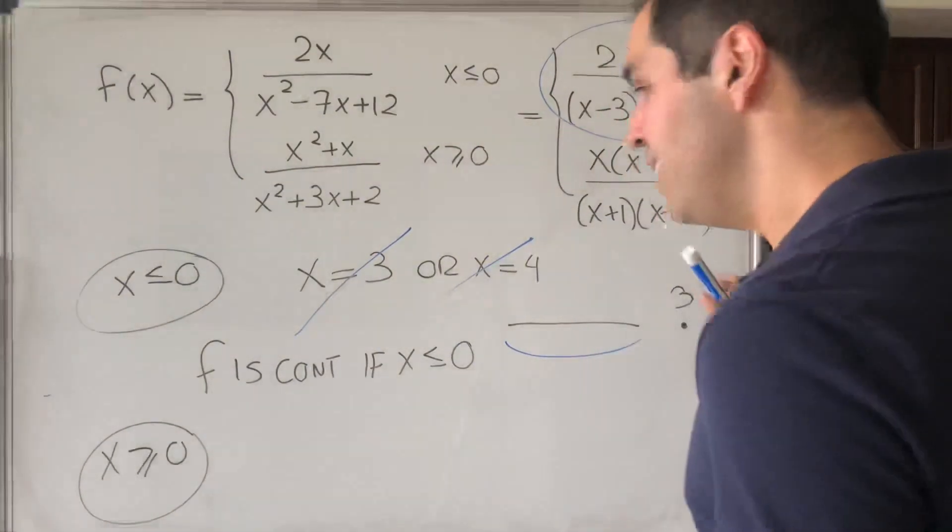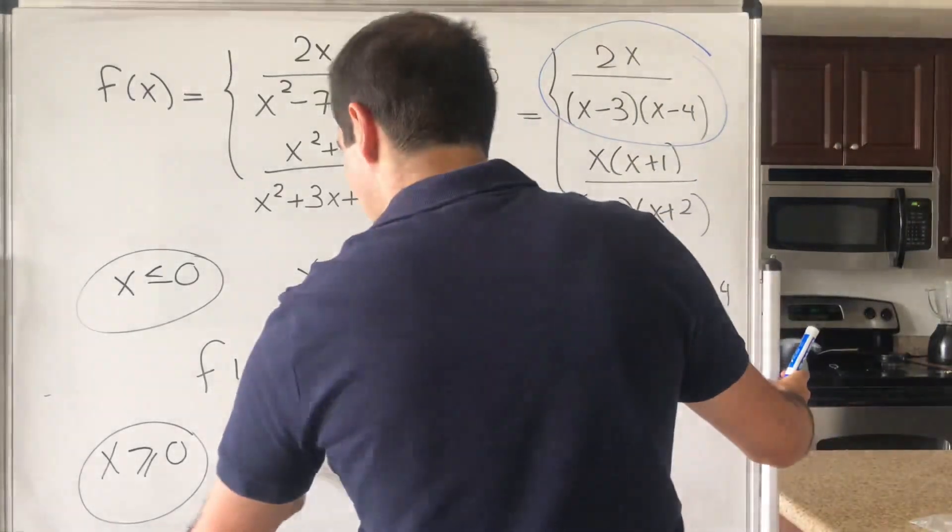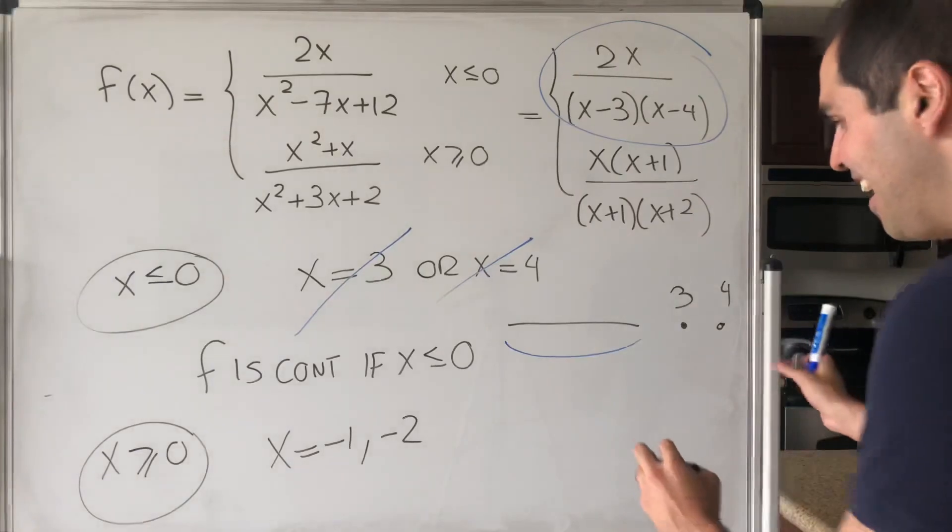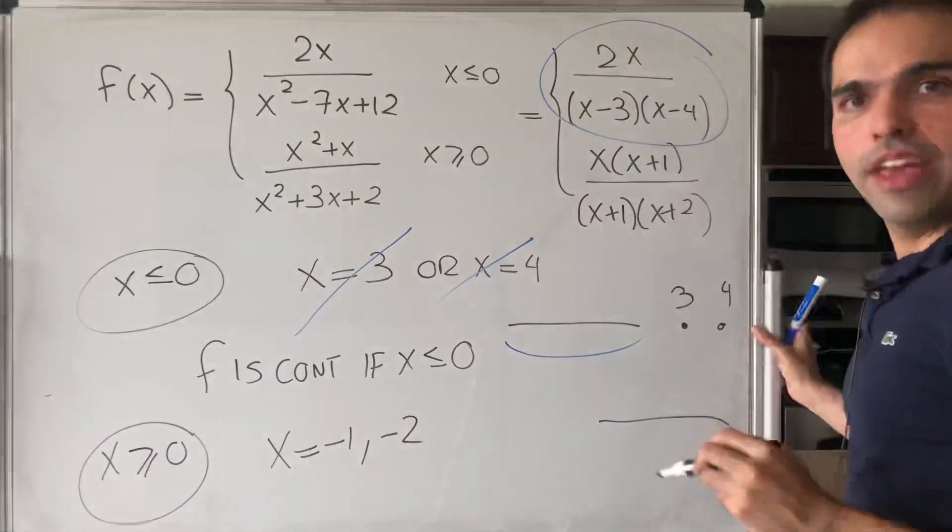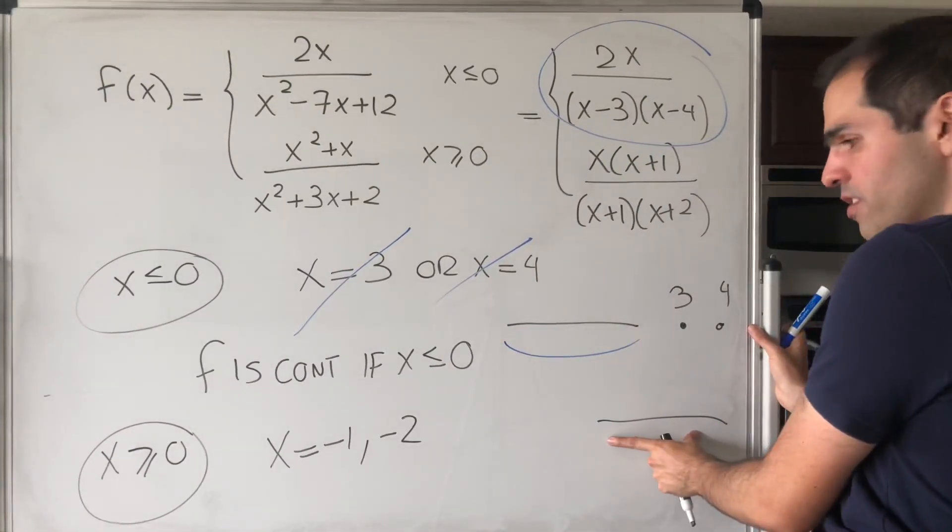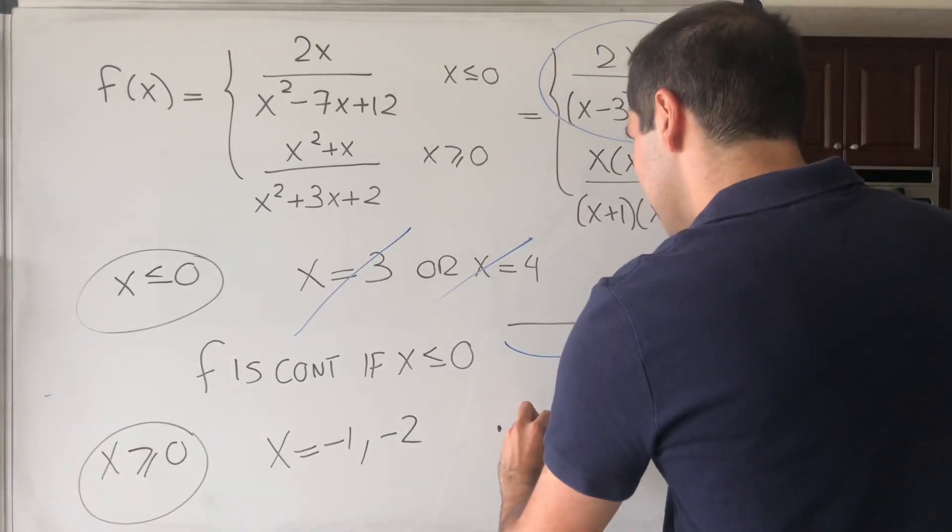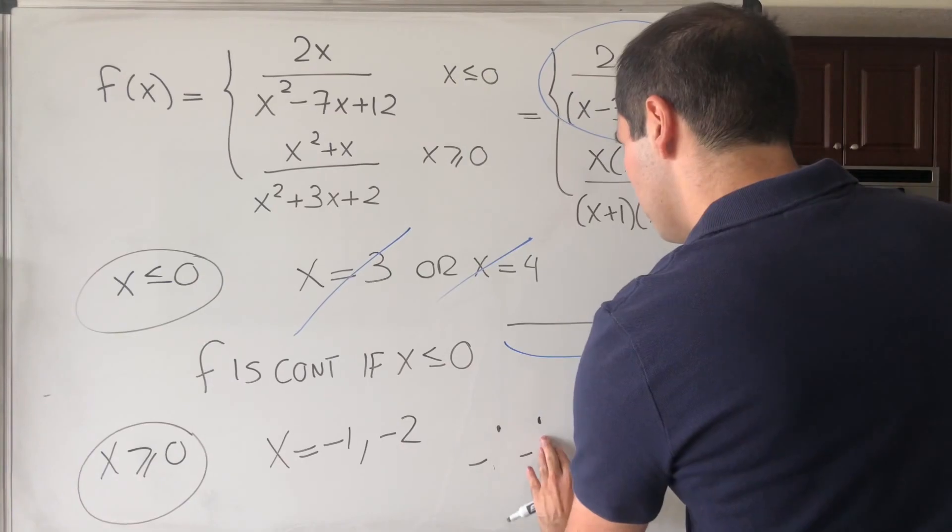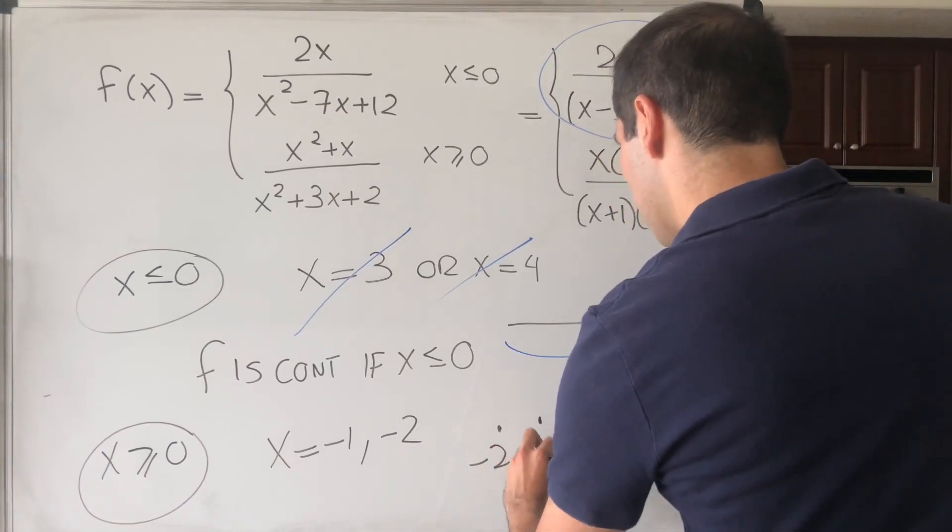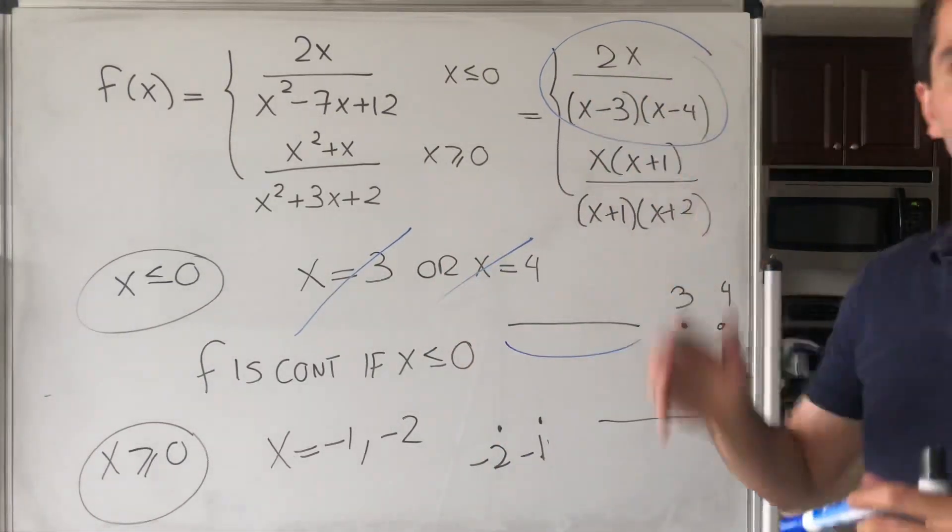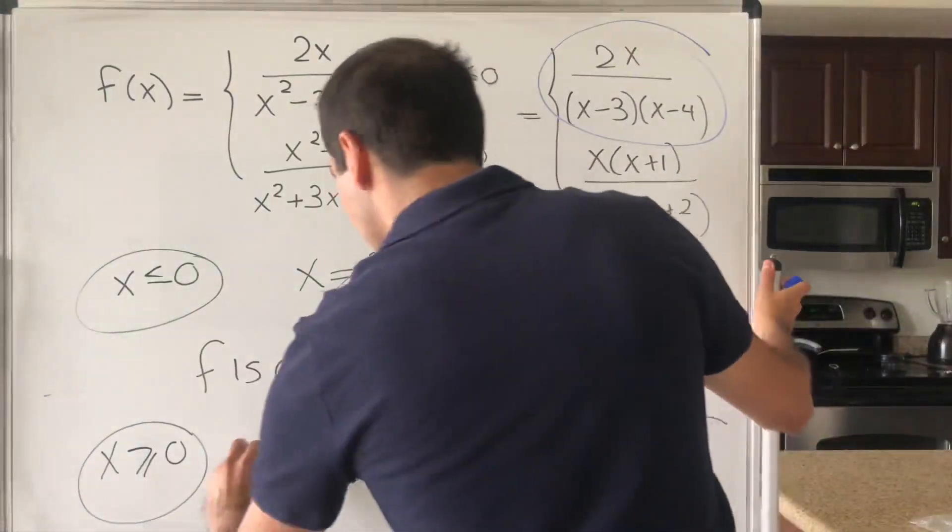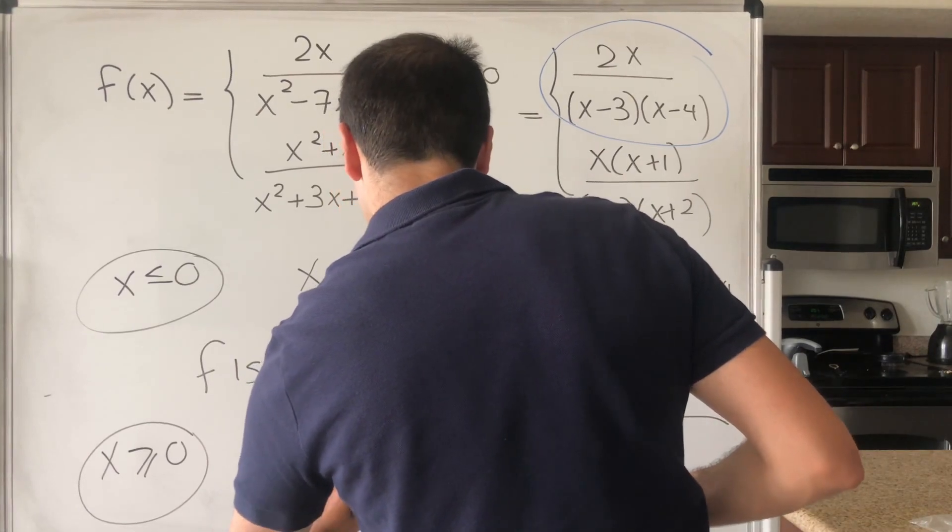Again, the only dangerous values is if x is minus 1 or minus 2, but again, they're not in the domain we're considering, because we're only considering positive x. So at minus 1 and minus 2, also doesn't matter, because they're outside of the stuff we're considering. So in fact, f is also continuous if x is greater or equal to 0.